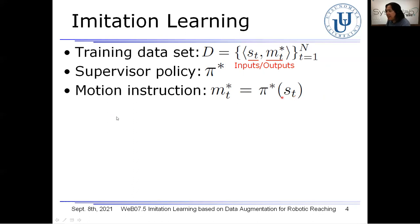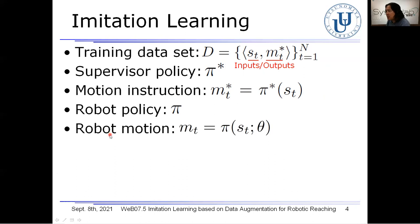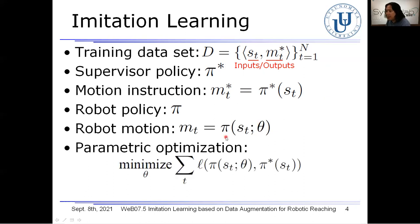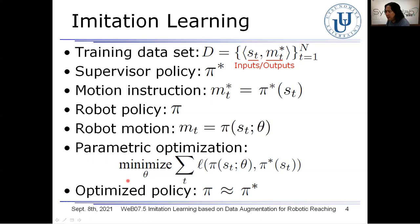On the other hand, the policy of the robot in the training phase is represented as you can see here. CG indicates network parameters. Therefore, the network parameters are optimized with this objective function in the learning phase. By repeatedly updating the robot policy, it approaches the optimal. In doing so, the reaching motions become increasingly similar to the ones instructed by the supervisor. Finally, this optimized robot policy is used in the motion planner.